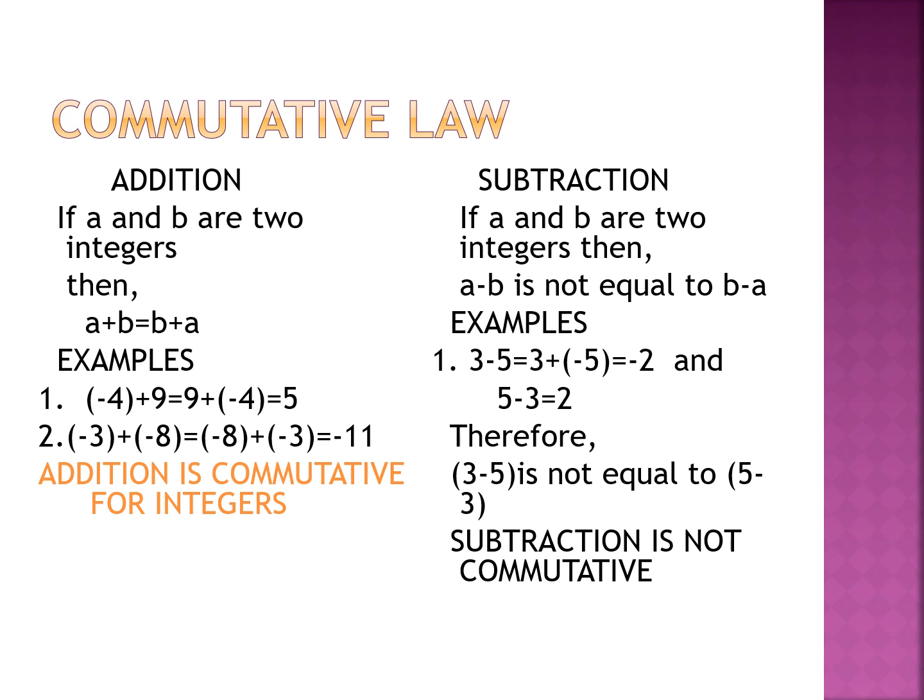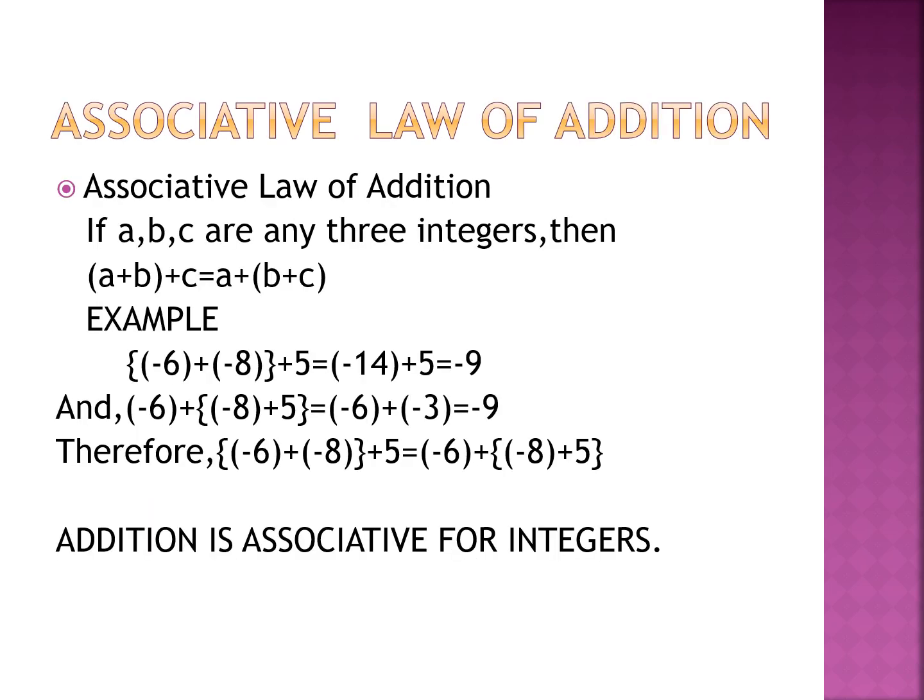So addition is commutative for integers. Now let us check for subtraction. If a and b are two integers, then a minus b is not equal to b minus a — if we change the order, the difference changes. For example, 3 minus 5 equals −2, but if we change the order, 5 minus 3 equals 2. Since −2 is not equal to 2, subtraction is not commutative.